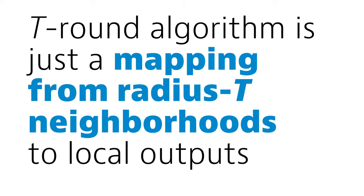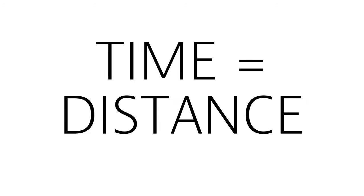This means that time and distance are interchangeable in the local model. And therefore fast distributed algorithms are also highly localized. If you have a fast algorithm, each node makes decisions based on the information that was available in its local neighborhood.